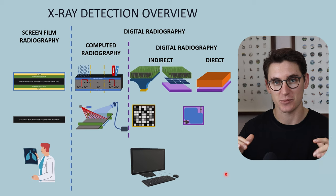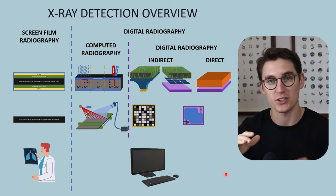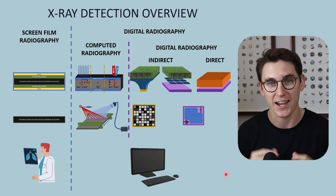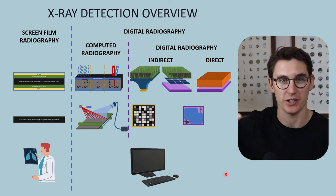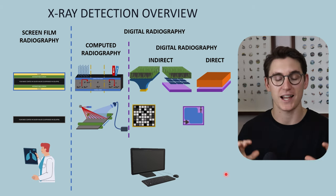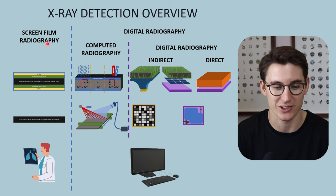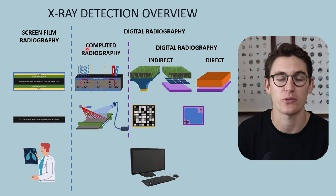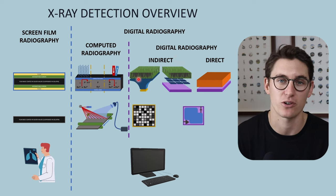X-ray detection systems detect x-rays that have been transmitted or scattered through a patient and convert that x-ray signal into an actual radiograph. We can broadly classify x-ray detection systems into two main categories: screen film radiography and digital radiography.